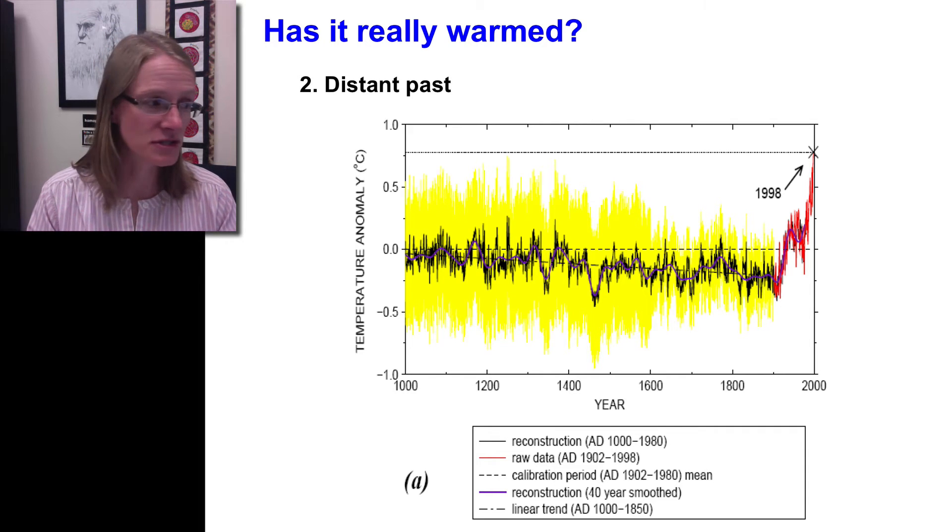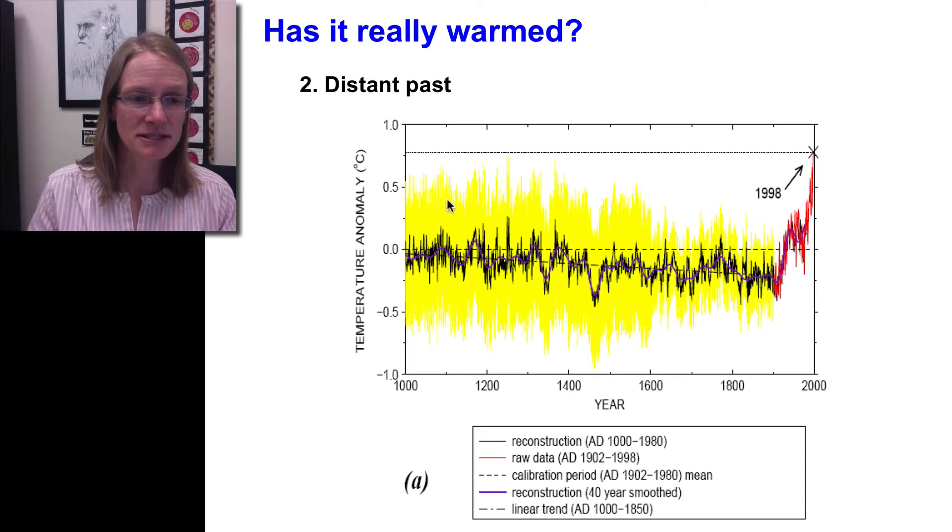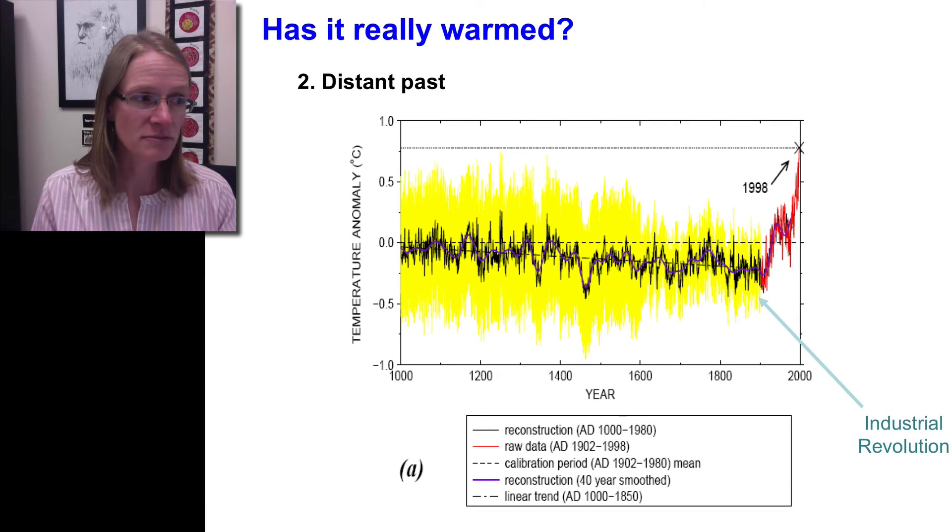We're able to take data from tree cores to understand what growing conditions and temperature levels were like way back in history. It's important to note what this particular axis is. Most graphs show raw temperature values, but here we're looking at a temperature anomaly. We looked at mean temperature values between 1902 and 1980 as our mean, represented by the zero dashed line. Values lower than that average are in the lower region, values above are up here. The trend shows that going back a thousand years temperatures overall declined and were colder than the 1902-1980 average until about this point in history, which hopefully many of you recognize corresponded to the industrial revolution.